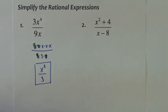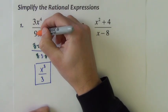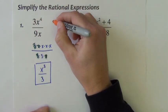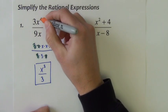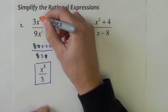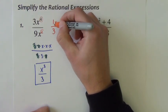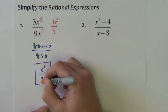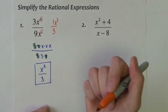In practice, you're probably not going to write all that out after the first time or two. You're just going to see 3 over 9 and reduce it to one third. And when you divide the x's, the rule says you subtract the powers — 4 minus 1 gives x to the third. You get the same answer either way.